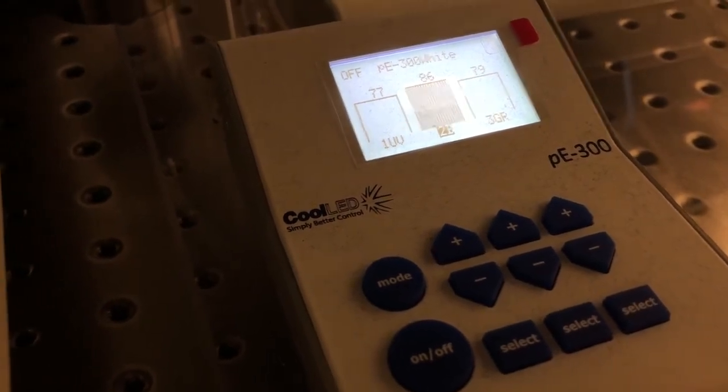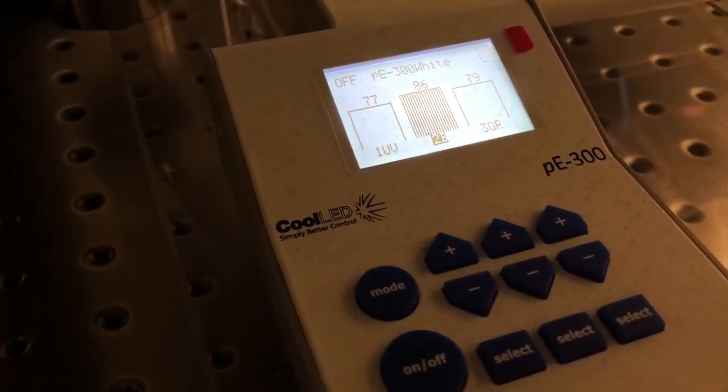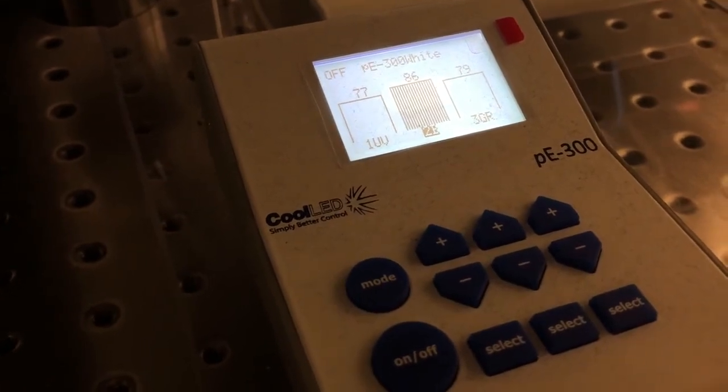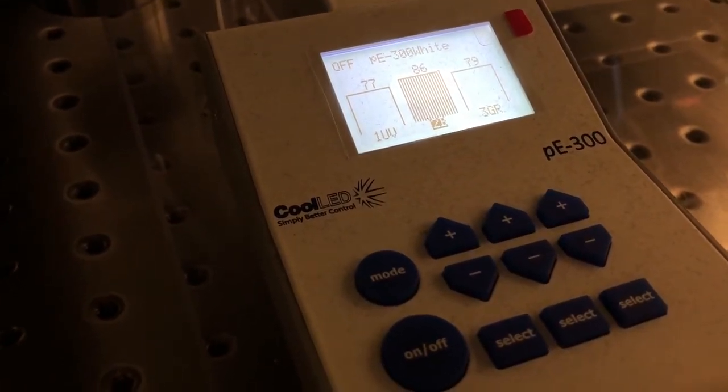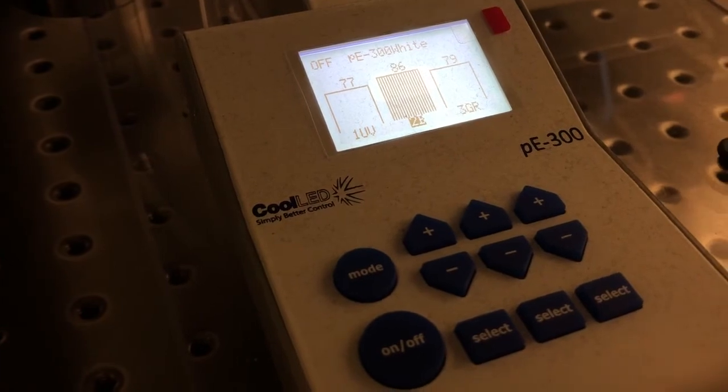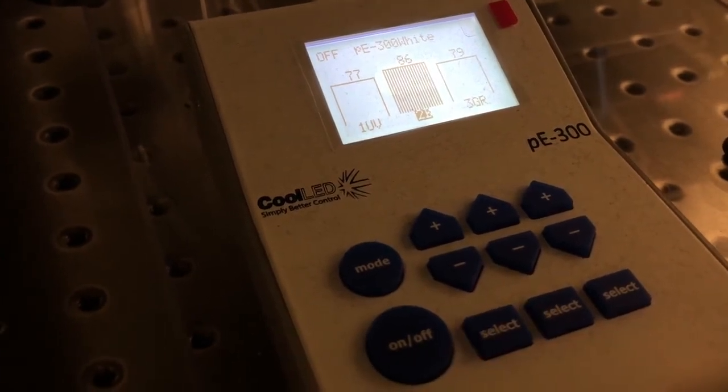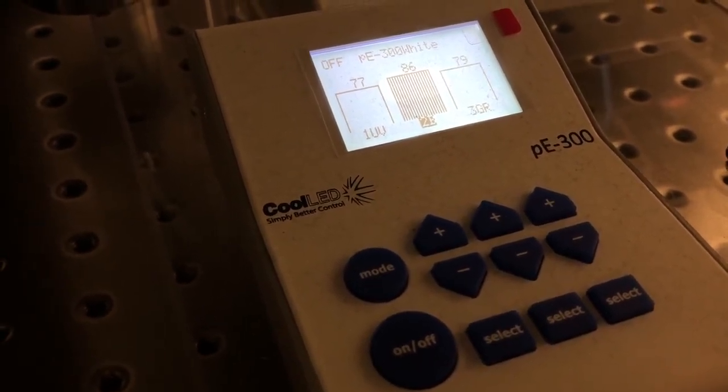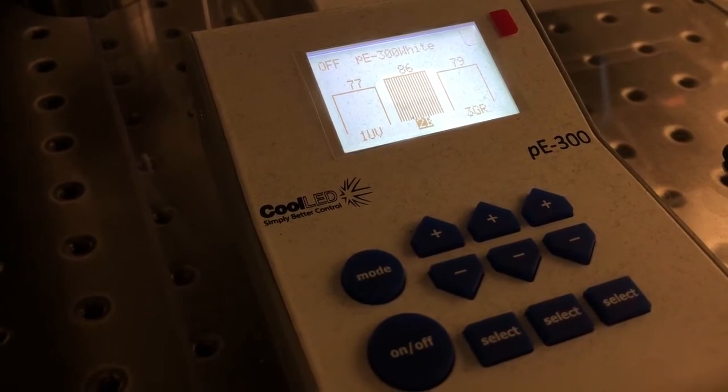Usually this doesn't matter because we have a filter cube on the instrument that will do the filtering, but if you want to be absolutely sure that there's not even a little bit of light leaking through, particularly from the UV, you can go ahead and turn off those alternative LEDs that you're not using.